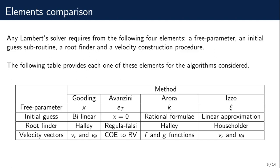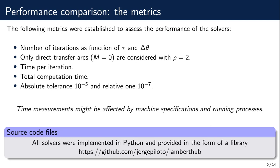All computations were performed assuming direct transfer arcs, for which a non-dimensional radius of rho equals 2 was imposed. The absolute and relative tolerances were set to 10⁻⁵ and 10⁻⁷ respectively. The performance comparison was done considering the number of iterations, the time per iteration, and the total time from when the algorithm is called until it outputs the final result, for a particular combination of transfer angle and non-dimensional time of flight. Time measurements may be affected by machine specifications. Python was used to implement all algorithms, and the source code is available in the repository named Lamberthalve.